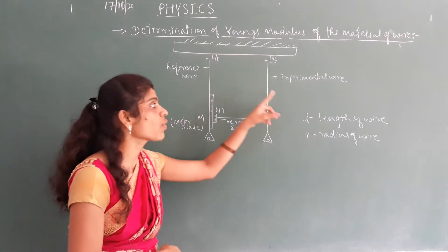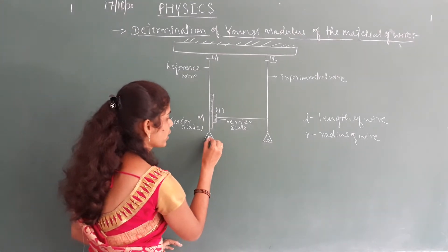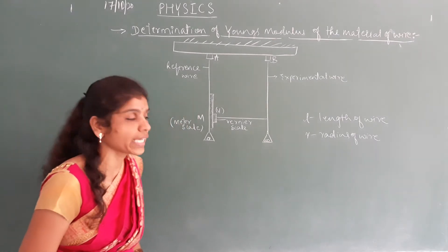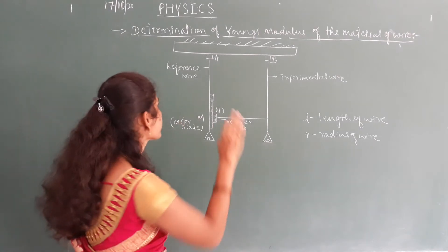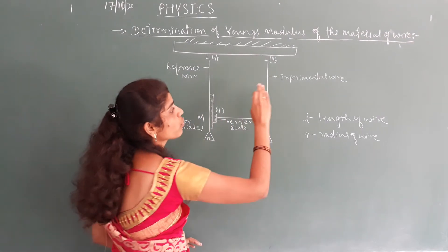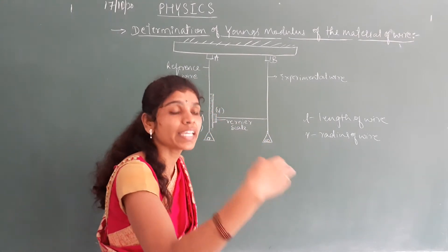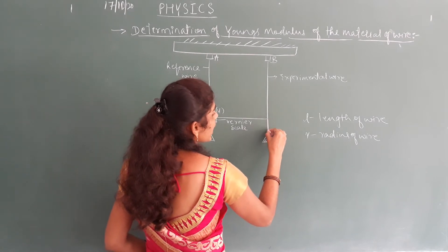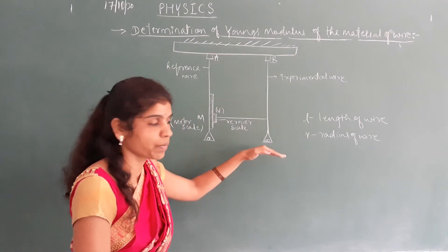Initially, the same weight is given to both wires and the readings are recorded. After that, the reference wire is kept as a reference, and for the experimental wire, the weight is increased. As we increase the weight, elongation of the wire takes place — that is, an increase in length of the wire occurs.